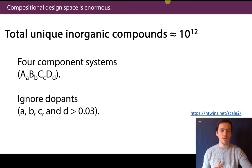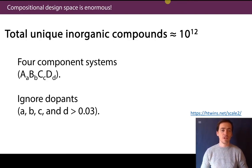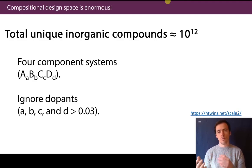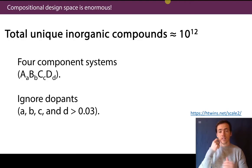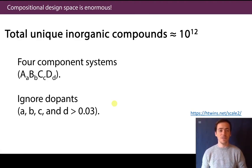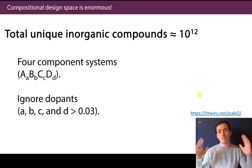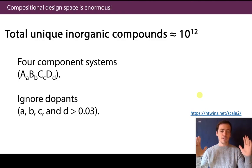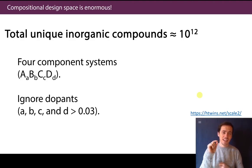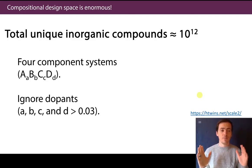We can't just experimentally investigate everything because the design space is absolutely mind-bogglingly big. There've been estimates that the total inorganic compounds available to study is something like 10^12. You could estimate this by noting it's a four-choose-83 problem, but that would just be stoichiometric one-to-one mixtures. When you account for different elemental amounts down to 0.03, you're still at 10^12. This is not like searching for a needle in a haystack — this is searching for an ant on the surface of the sun. We cannot do this with the old tools; we need new tools.